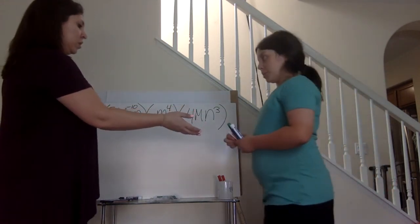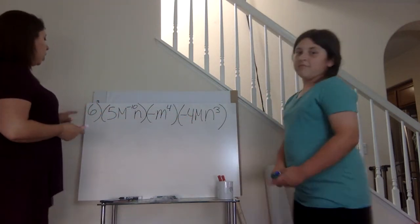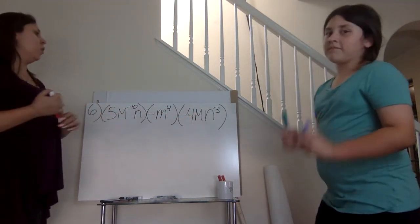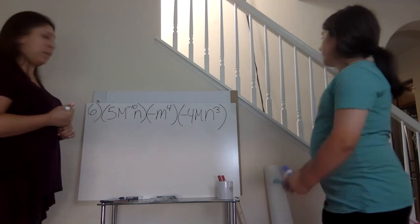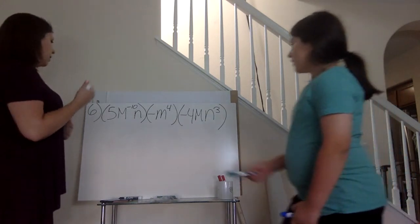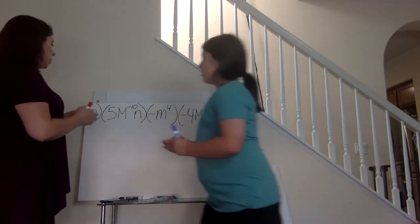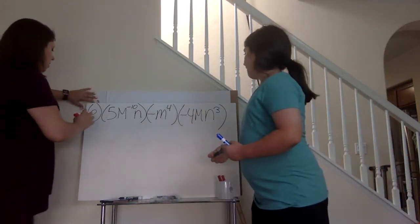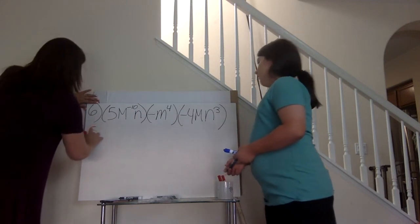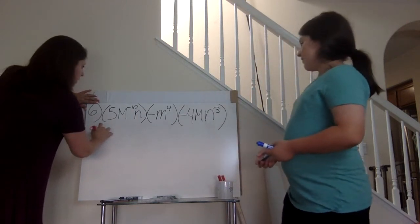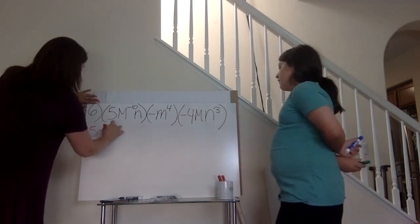I need all of my whole numbers that are bases. What are they? The five and the four — five times negative four.